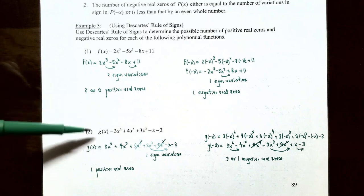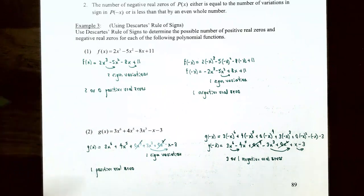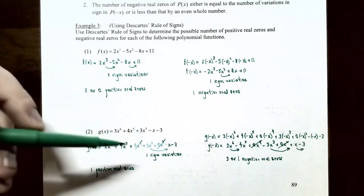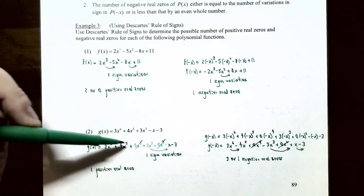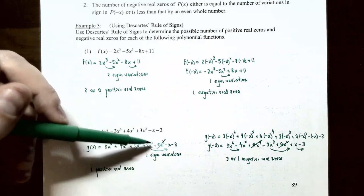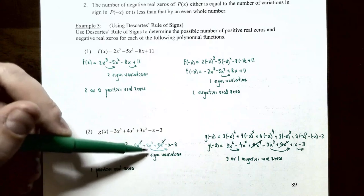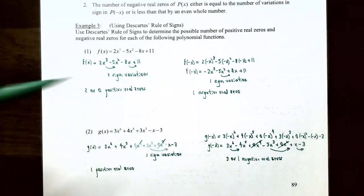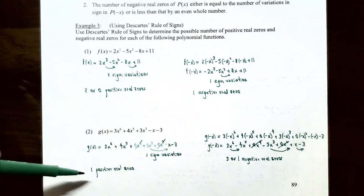For part two, g of x equals 3x to the 6th plus 4x to the 5th plus 3x cubed minus x minus 3. Looking for sign variations: from positive 3 to positive 4 — no variation; from positive 4 to positive 3 — no variation; from positive 3x cubed to negative x — that's a sign variation; from negative x to negative 3 — no variation. Only one sign variation, so g of x has exactly one positive real zero.